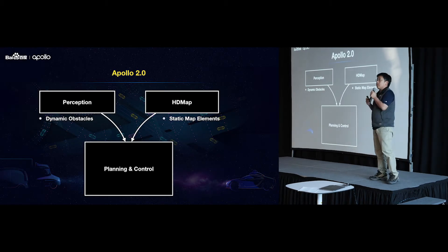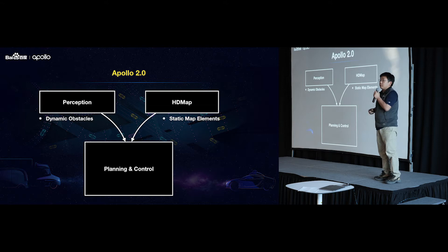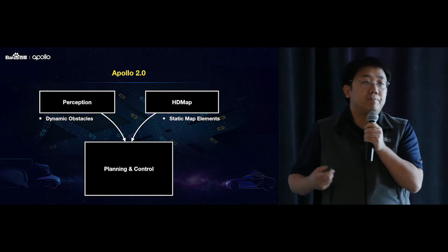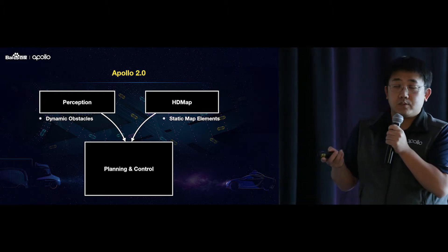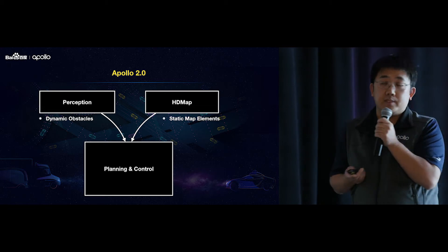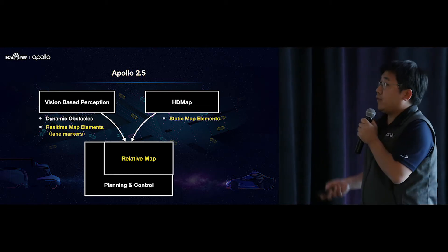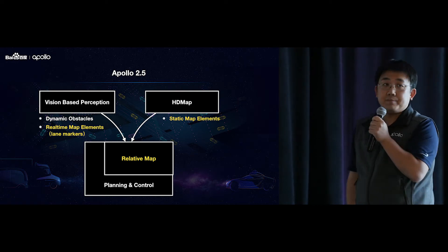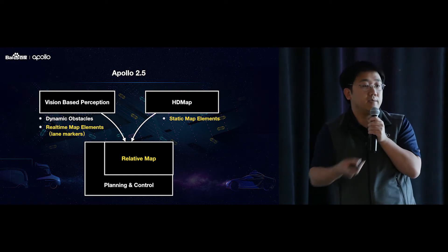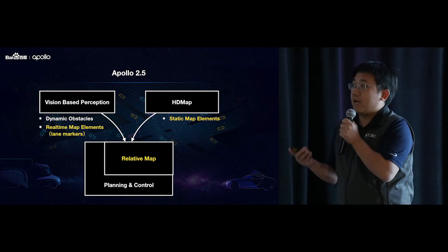This is a simple diagram for Apollo 2.0. At the bottom are the planning and control modules, which rely on perception and the HD map. The perception outputs dynamic objects, and the HD map provides static map elements. In Apollo 2.5, we introduced vision-based perception, which can also output real-time map elements.